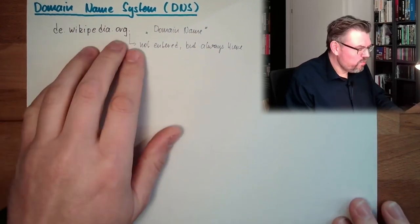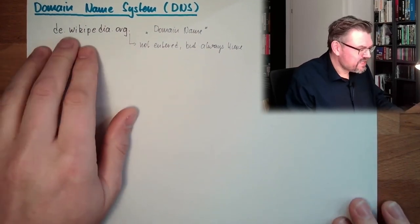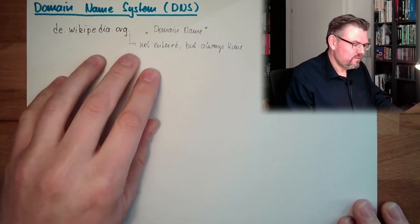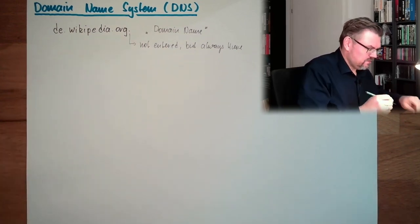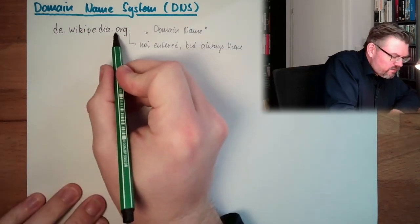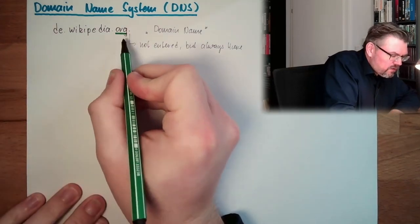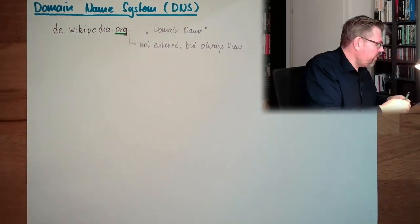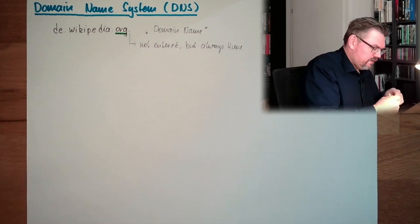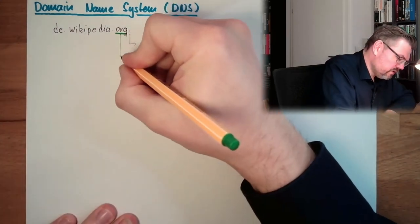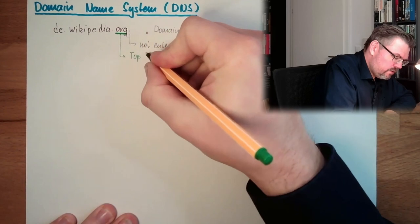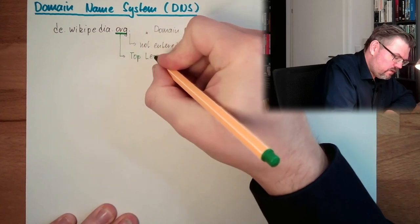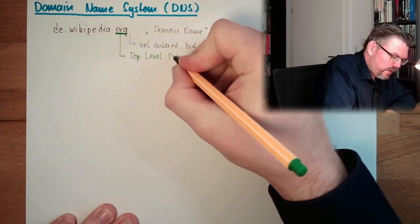The domain name is always grouped and separated by dots. The last part — the final component after the last dot — is called the top-level domain, or TLD. This is the so-called top-level domain.